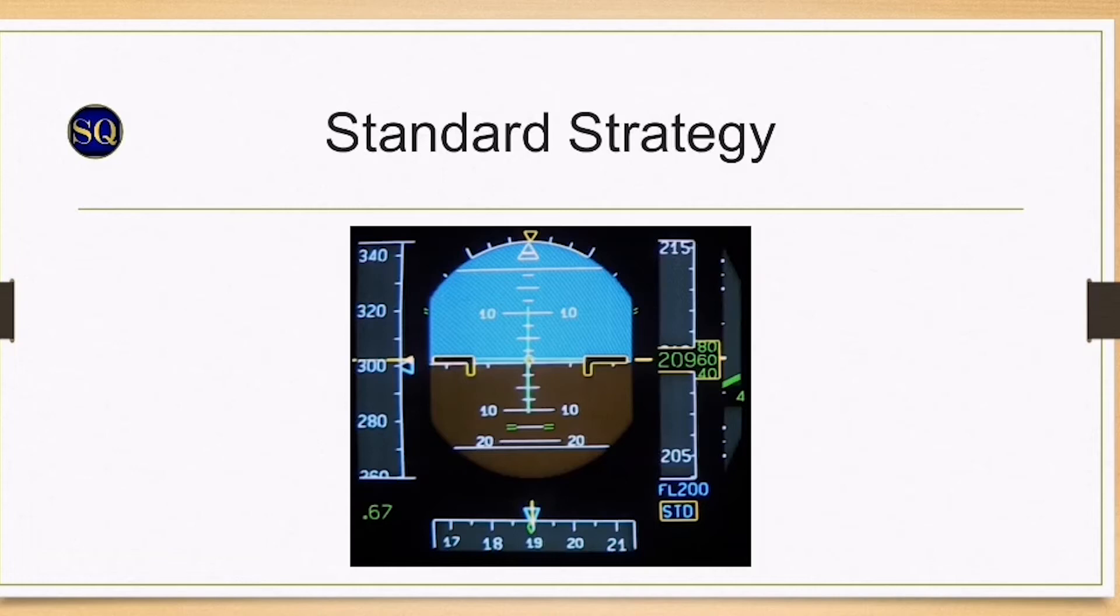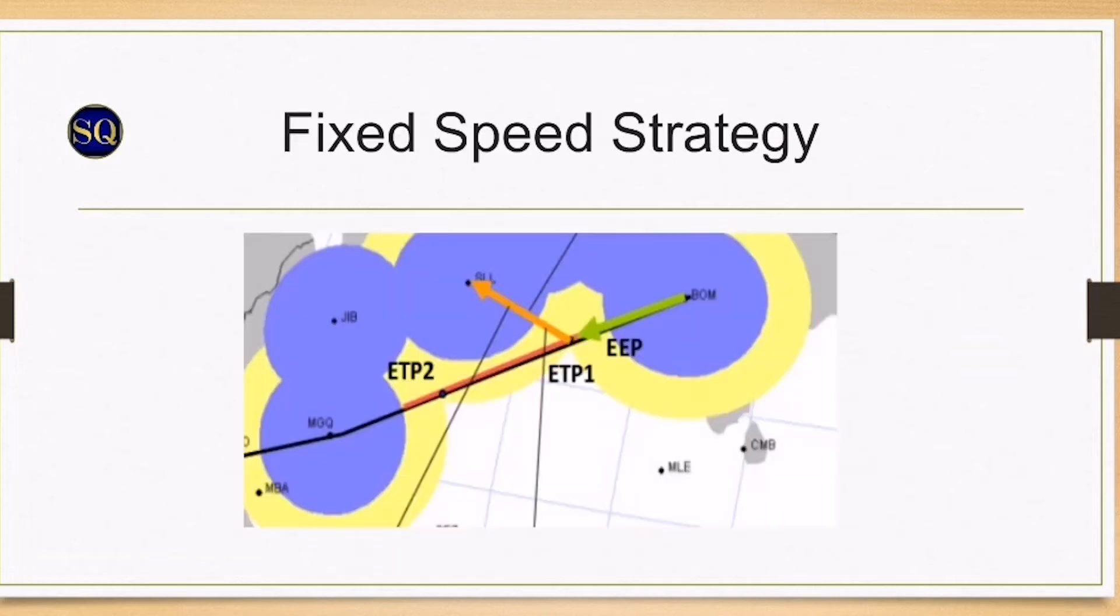Let's dive into the fixed speed strategy. It's normally used for ETOPS or EDTO operations. And we all know that ETOPS stands for engines turning or passengers swimming. Just kidding. We will discuss ETOPS operations in another video. If you know what ETOPS stands for, please comment in the section below.